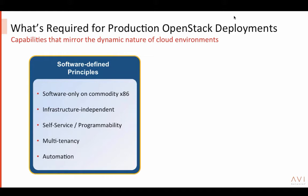You might deploy certain applications within OpenStack on VMs on KVM, or deploy applications on bare metal, or have a container deployment incorporated as part of your OpenStack cloud. You might also have workloads running in public cloud like AWS, Azure, or Google Cloud Engine. You want to make sure whatever solution you deploy can support this multi-hypervisor, multi-cloud, or hybrid cloud environment.